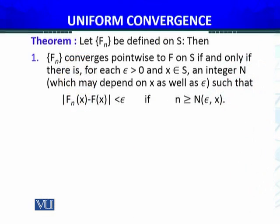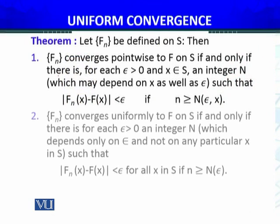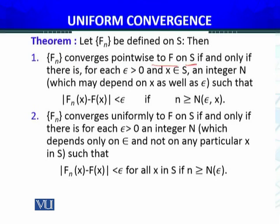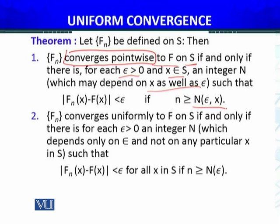What about the converse? Converse ko bhi discuss karayenge. So, theorem state karayenge — isko proof karne ki koi zaroorat nahi. Let fn be defined on S, then the sequence of functions fn converges pointwise to f on the set S if and only if there is, for each epsilon greater than zero and x belongs to S, an integer N which may depend on x as well as epsilon — jaise humne examples mein bhi dekha tha — toh hame usko kehte hain ki ye pointwise convergence hai. Converges pointwise to f on x if |fn(x) - f(x)| less than epsilon, if n is greater than or equal to capital N, which may depend upon epsilon as well as x.